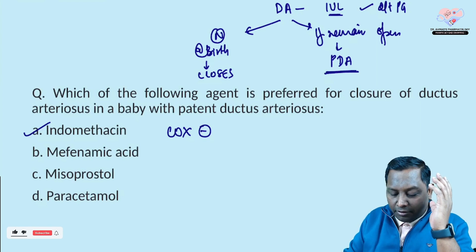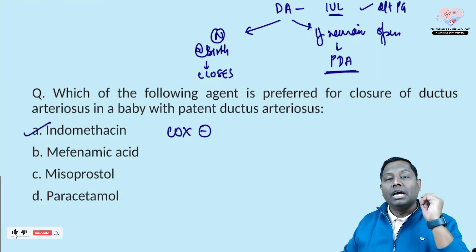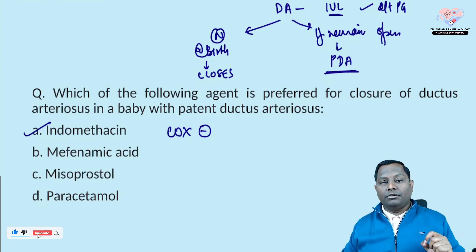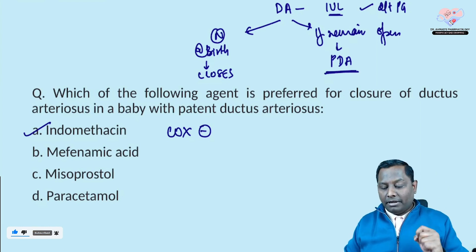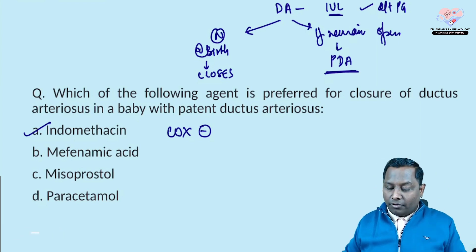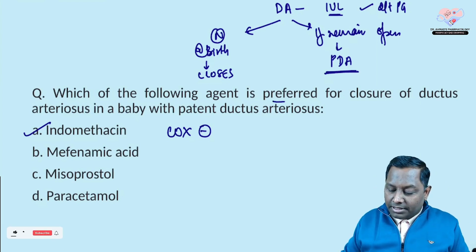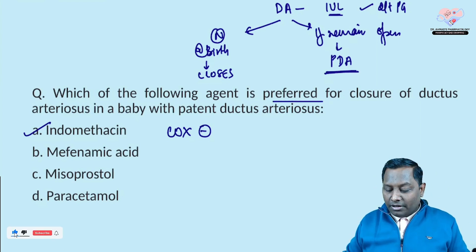As COX inhibitors, we can use drugs like indomethacin and ibuprofen. Mefenamic acid is also a COX inhibitor, but it is not the preferred one. The examiner is asking which is the preferred one — mefenamic acid is currently not the first choice.